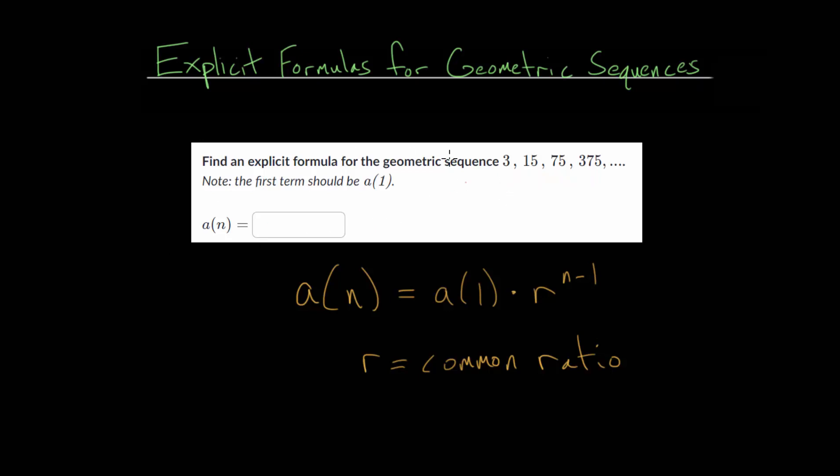So let's now look at this specific example problem, where we need to find that explicit formula. So we start with 3, then go to 15, 75, and so on. This is going to go on forever. And we need to know the first term in our sequence. That's 3. So this is our a of 1.